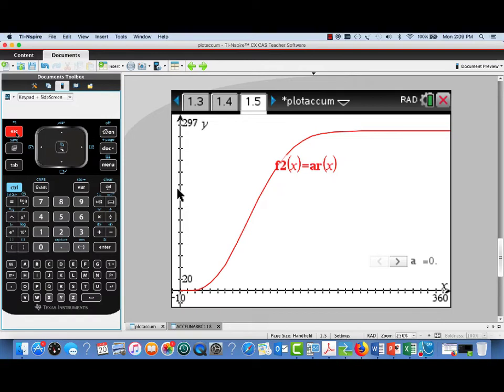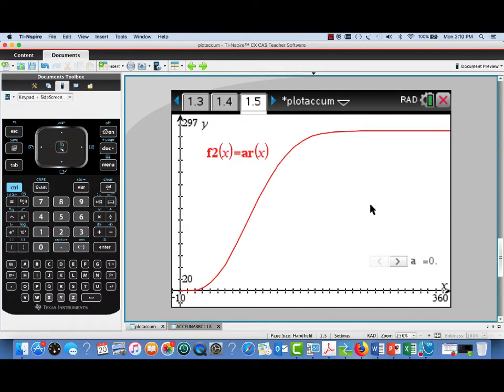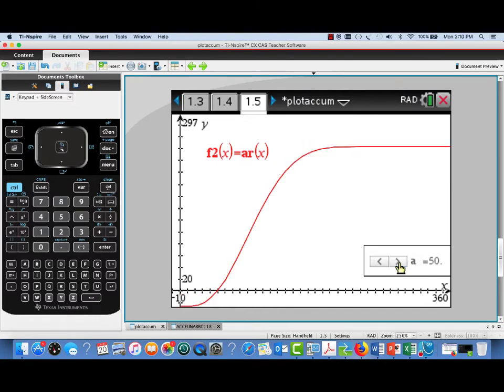Now, suppose we wanted to know the number of people who entered the line from X equals 60 seconds to X equals 300 seconds. We can control that now by setting our lower limit of integration, A, to 60. So I'm incrementing A to 60. And notice the effect on the graph.